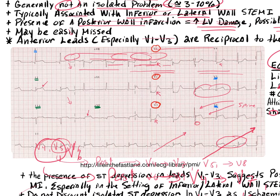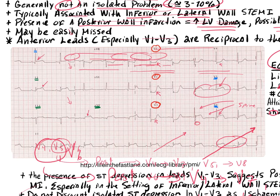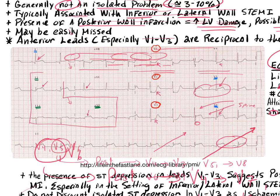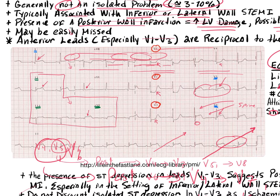Looking at the lateral leads: V5 shows slight elevation, V6 a little elevation, lead 1 ever so slightly elevated, and AVL not much going on. So we're looking at an inferior wall STEMI with possibly a little lateral involvement and reciprocal changes in the anterior leads.